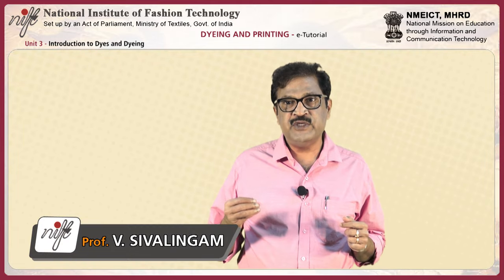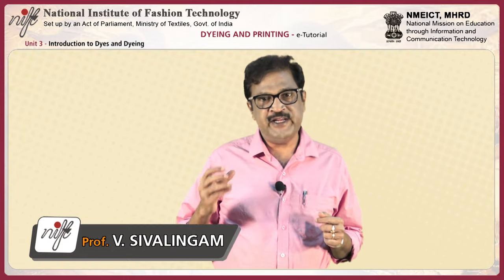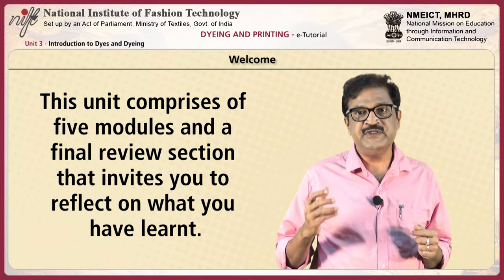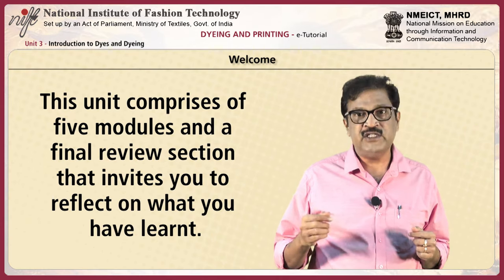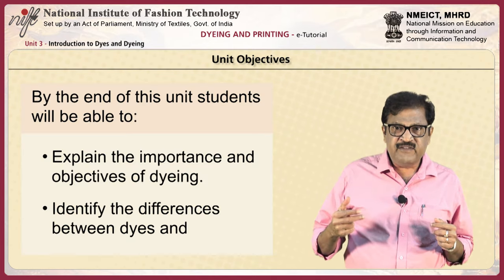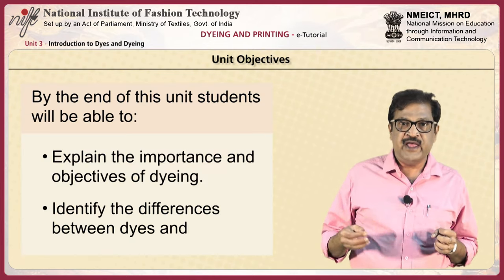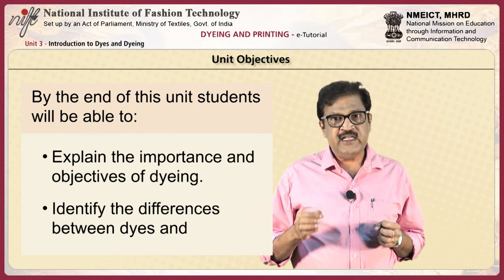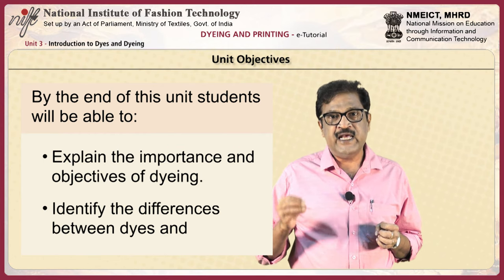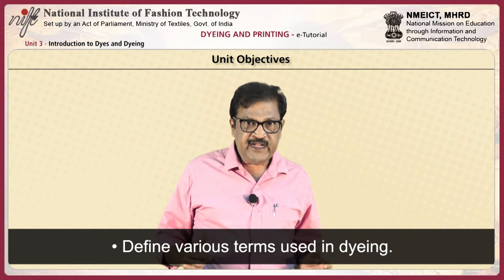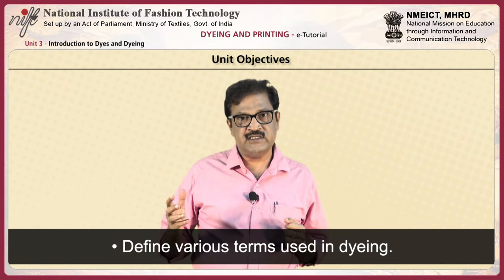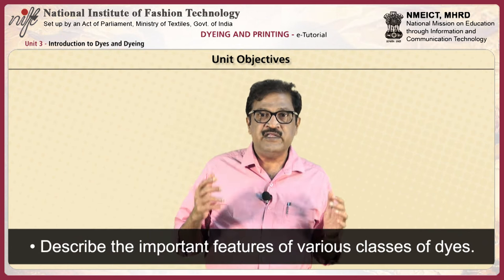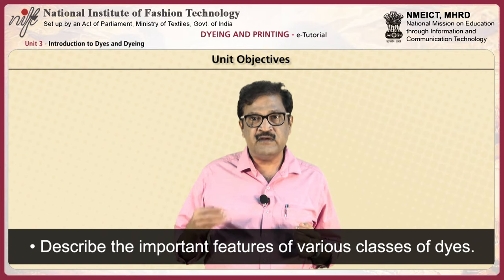This unit introduces you to dyes and the dyeing process. This unit comprises five modules and a final review section that invites you to reflect on what you have learned. By the end of this unit, students will be able to explain the importance and objectives of dyeing, identify the differences between dyes and pigments, define various terms used in the dyeing process, describe how dyes are classified, and describe the important features of various classes of dyes.